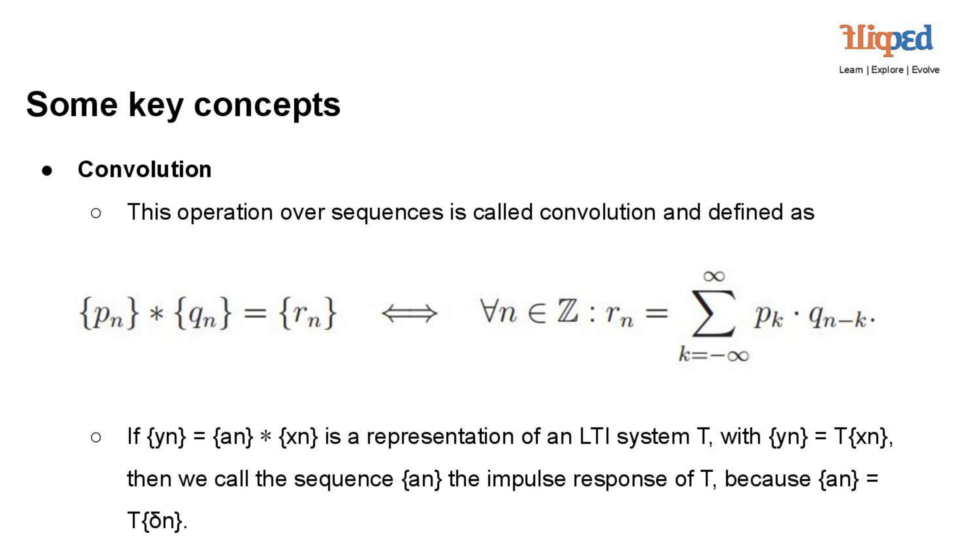x(n) is the input signal at time index n. Convolution is a vital operation in signal processing, denoted as p(n) into q(n) equals r(n), for all n belonging to Z, where r(n) is the result of convolution. It involves the summation of products of p(k) and q(n-k) across a range of values for k.